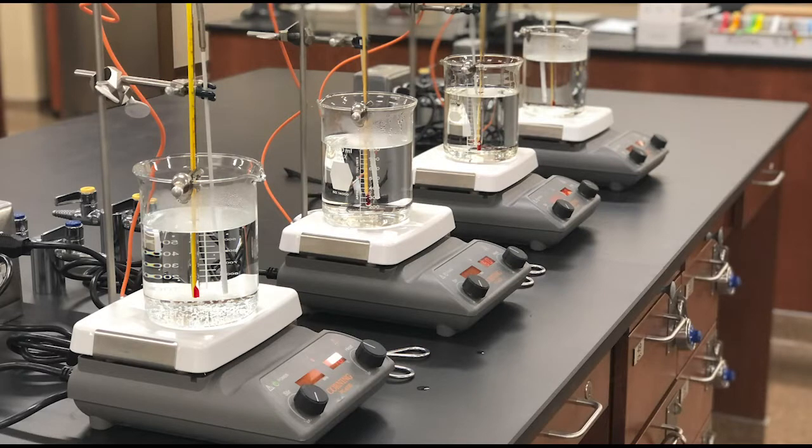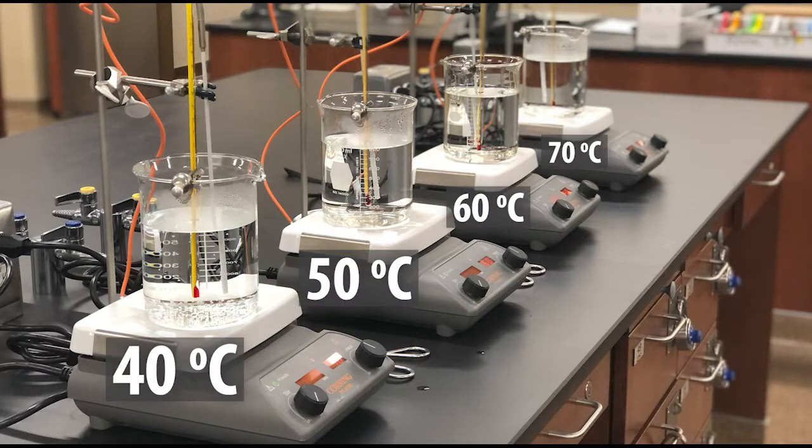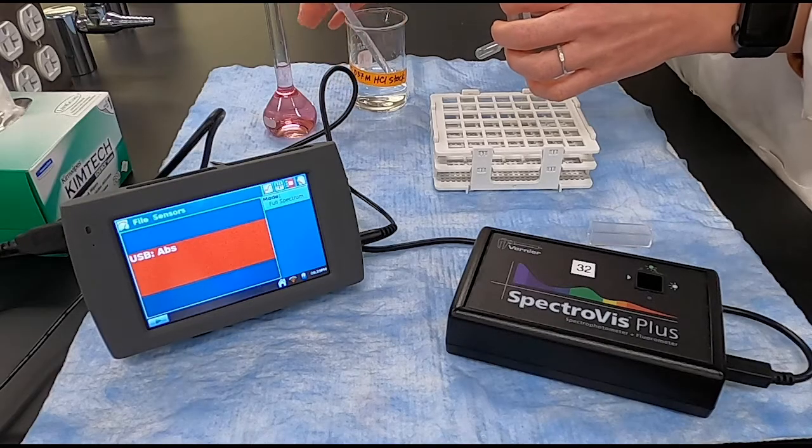We'll be using four water baths that are each at a different temperature, about 40 degrees, 50 degrees, 60 degrees, and 70 degrees, although you are going to want to record the actual temperature from the thermometer. We'll be collecting the absorbance spectrum of our solution at each one of these temperatures and also room temperature.